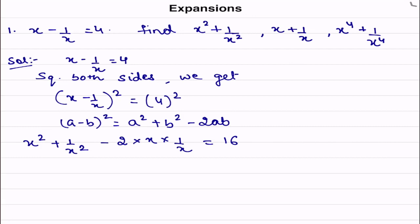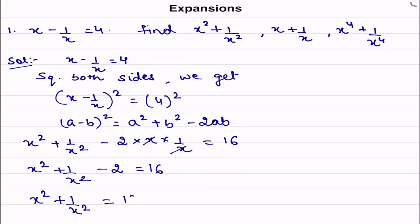In the next step, x and x cancel out, leaving minus 2, which equals 16. So x squared plus 1 by x squared equals 16 plus 2, which is 18. So the answer to the first part is 18.